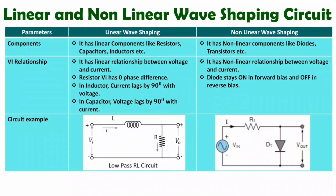For a linear circuit example, I have considered a low pass filter. To make a low pass filter using an RL network, I have connected an inductor in series and the output is taken across R. If you want to make a low pass filter using an RC network, you connect a capacitor in series and the resistor at the output. Since we are using only an inductor and resistor — or resistor and capacitor — this is a linear wave shaping circuit.